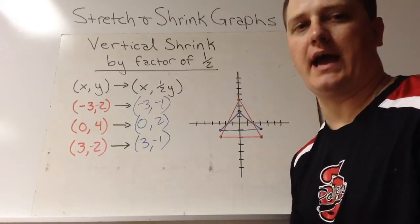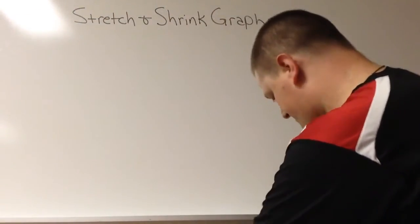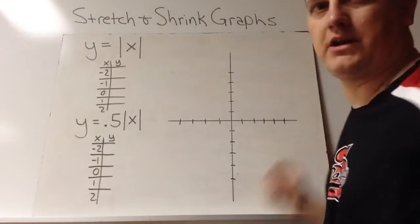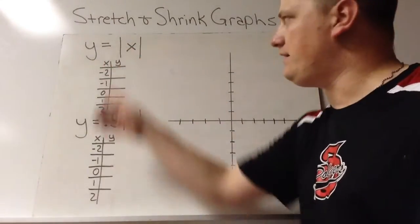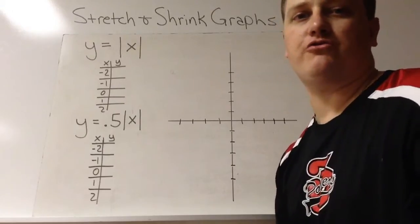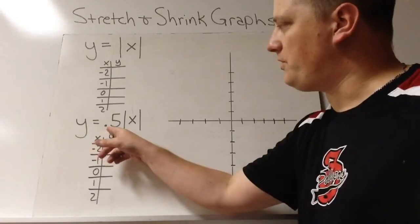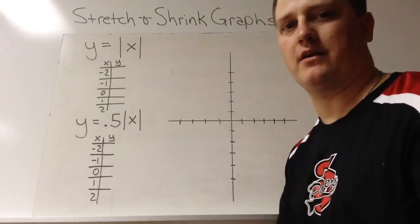We're first going to look at the basic graph. What I'm going to do here is graph the parent function of absolute value, y equals absolute value of x. I'm going to graph a vertically shrunk version so you can see the comparison of these. This one we're multiplying by 0.5, so this should vertically shrink by a factor of 0.5.